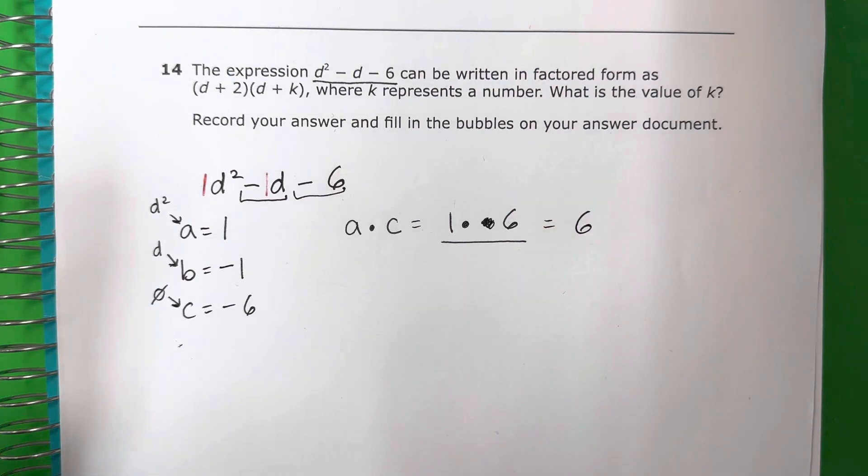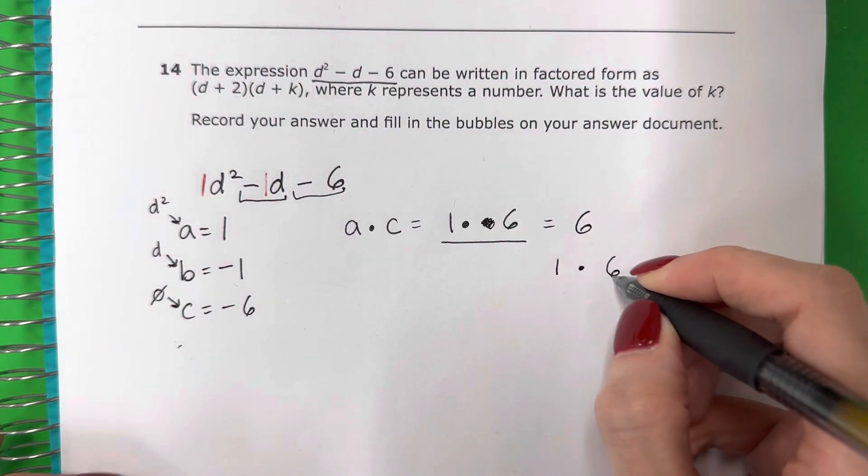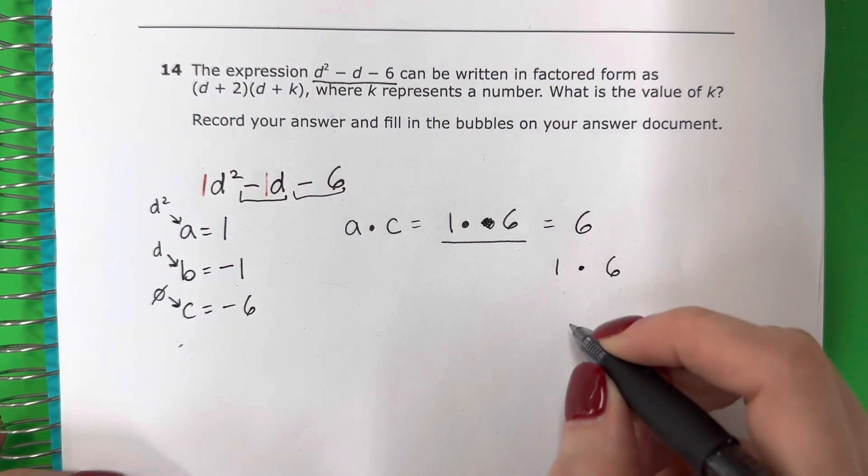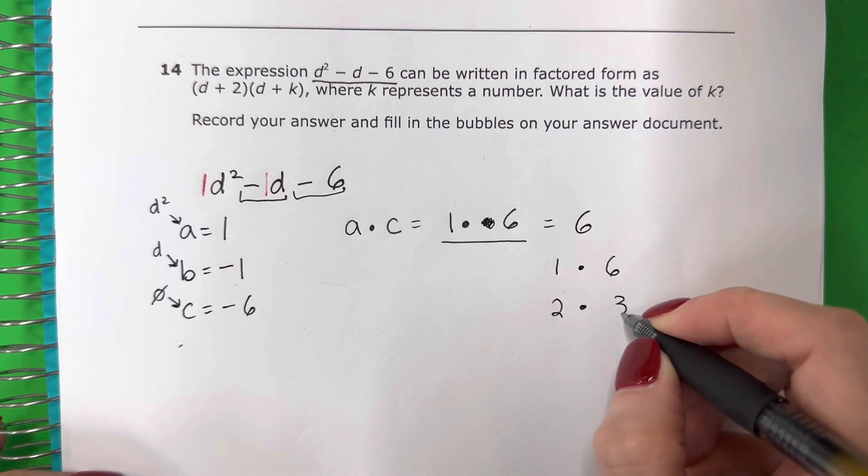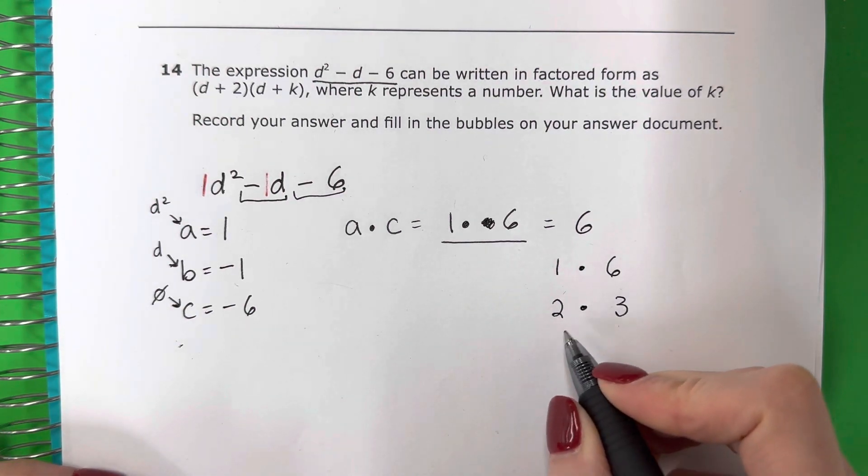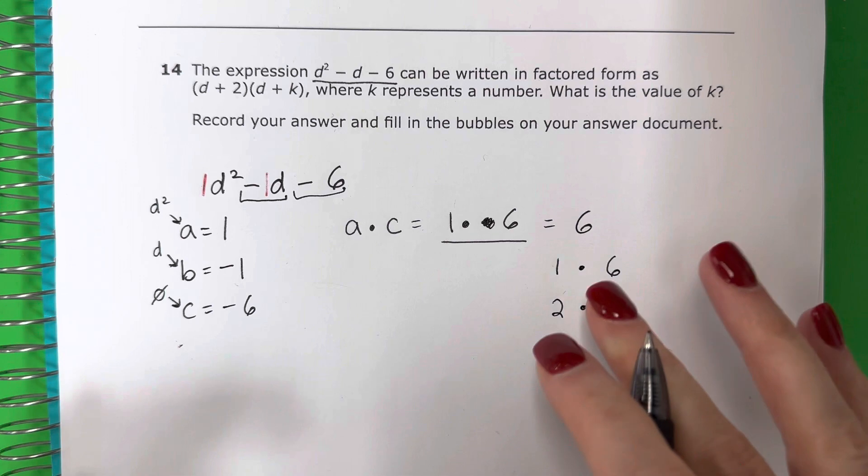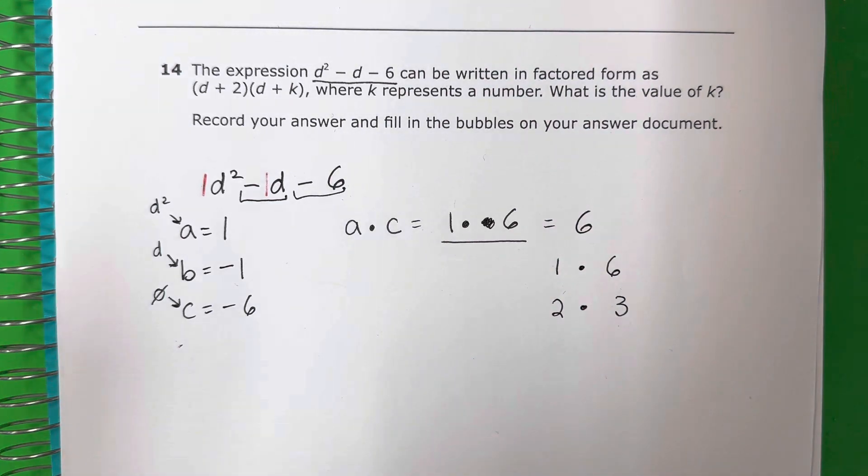So we're going to need to find the factors for this. Necesitamos encontrar los factores por eso. So that would be 1 times 6, 1 por 6, that's 6, es 6. And 2 times 3, 2 por 3, that is 6, es 6. And 3 times 2, I don't need to put because it's the same numbers. No necesito poner 3 por 2 porque son los mismos números. So that's where I stop, este es donde terminó.